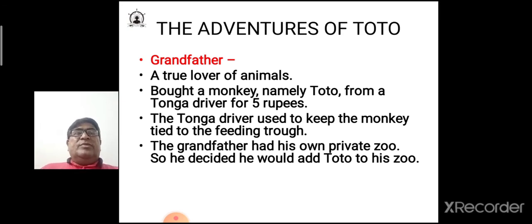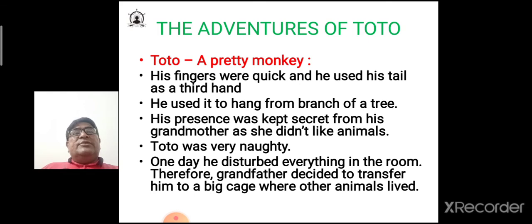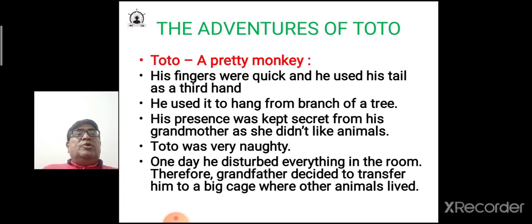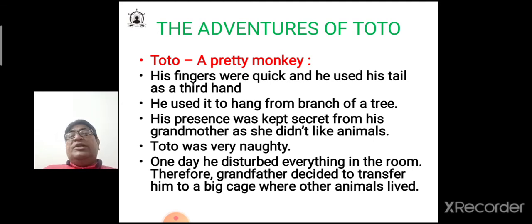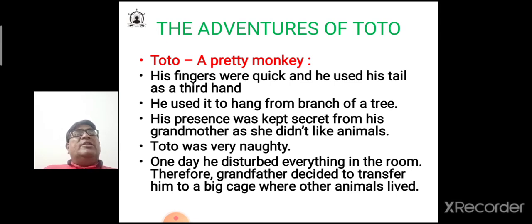Grandfather loved animals very much, but importantly, grandmother did not like animals — she hated them. Toto was a pretty monkey whose fingers were quick and he used his tail as a third hand, hanging from one branch to another. His presence was kept secret from grandmother as she disliked animals. Toto was very naughty and one day disturbed everything in the room, so grandfather decided to transfer him to a big cage where other animals were living.